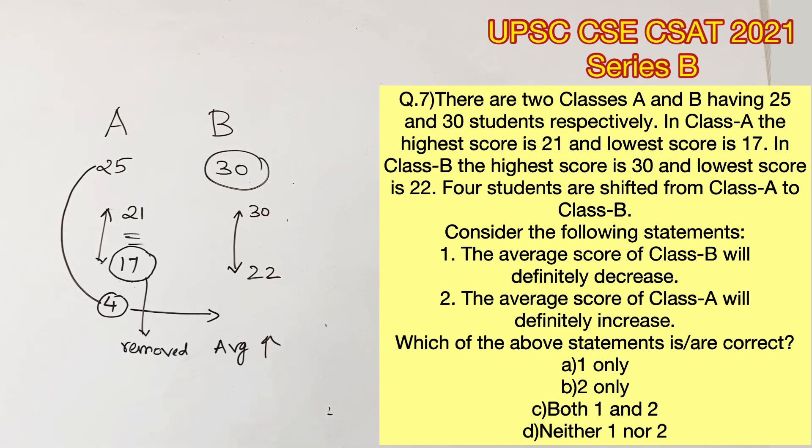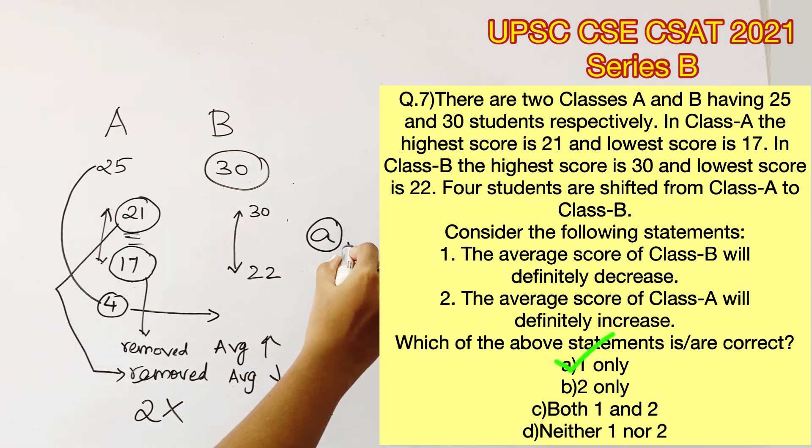At the same time, if you remove the higher values, your average will decrease because all you are left with are lower values. So in our case, we are not sure if the four people secured high or low marks. Statement 2 is false because we don't know if it will definitely increase or definitely decrease. So option A is the right answer.